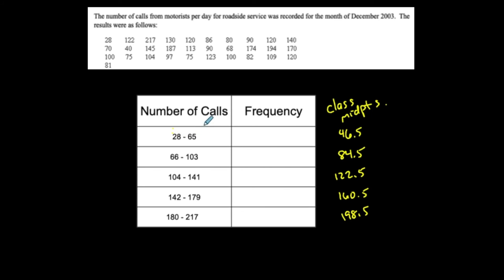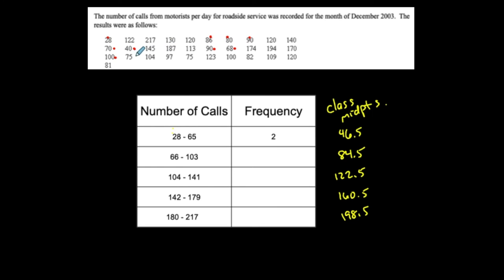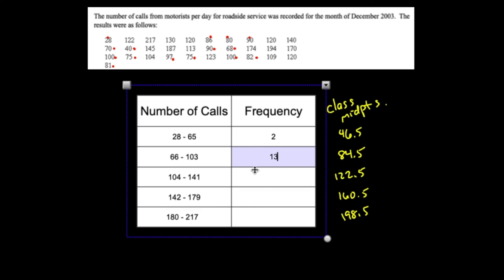Including 28 and including 65. I like to mark them off as I go. Between 28 and 65 inclusive, I find only 2 values, so the frequency of that class is 2. Now between 66 and 103 inclusive, I count: 1, 2, 3, 4, 5, 6, 7, 8, 9, 10, 11, 12, 13. There are 13 values in that interval, so that frequency is 13.